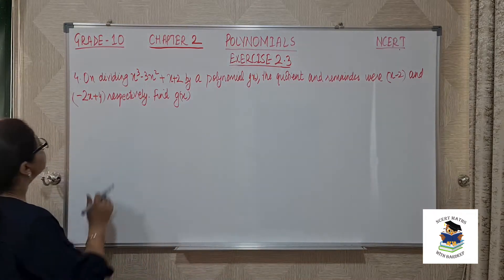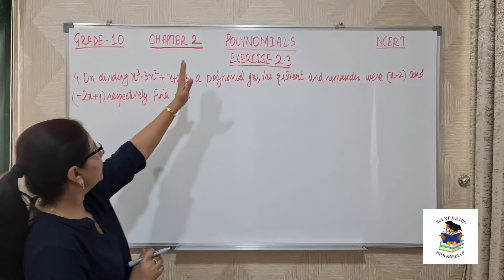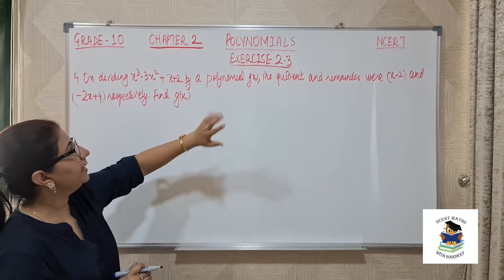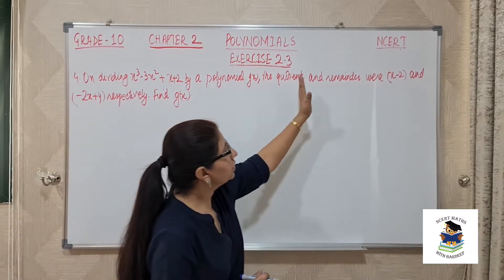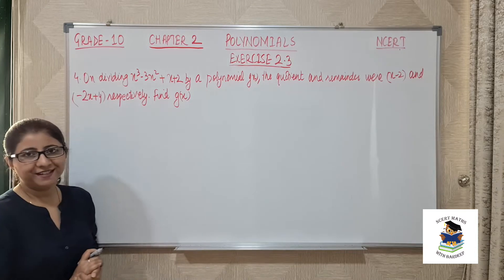Fourth question is on dividing x cube minus 3x square plus x plus 2 by a polynomial gx. The divisor is not given, the quotient and remainder are given. We need to find gx.